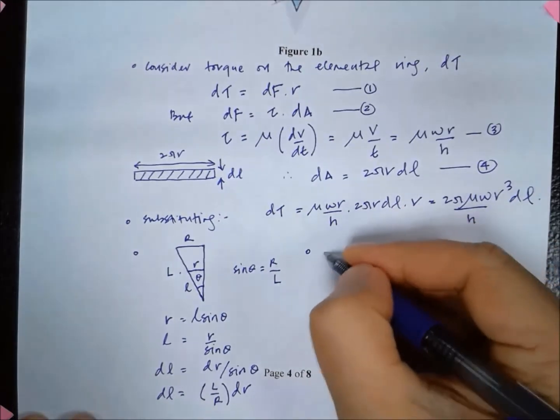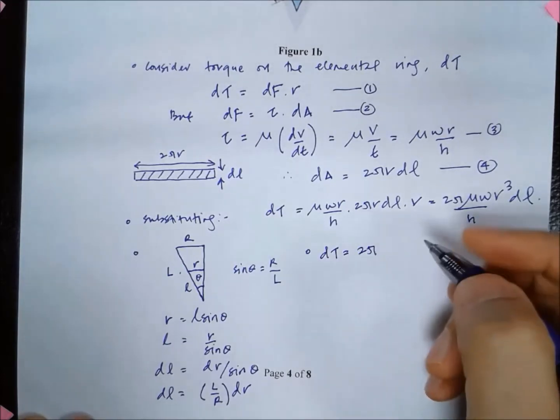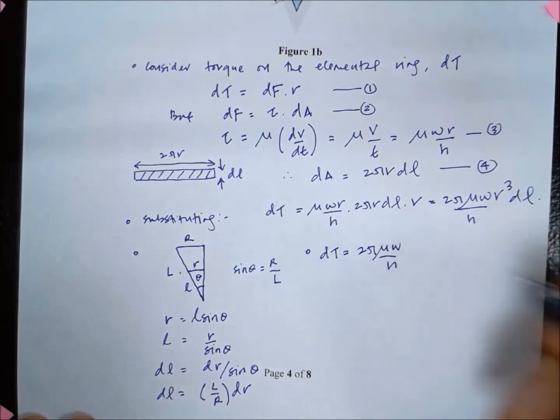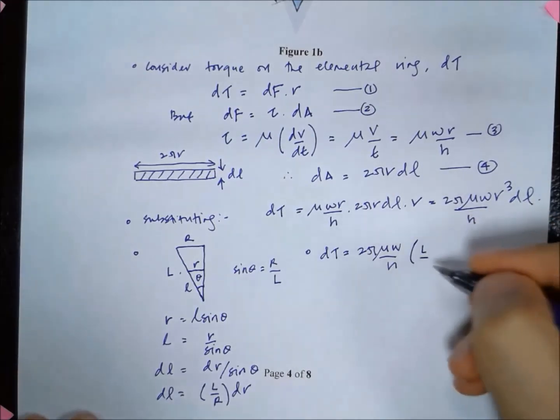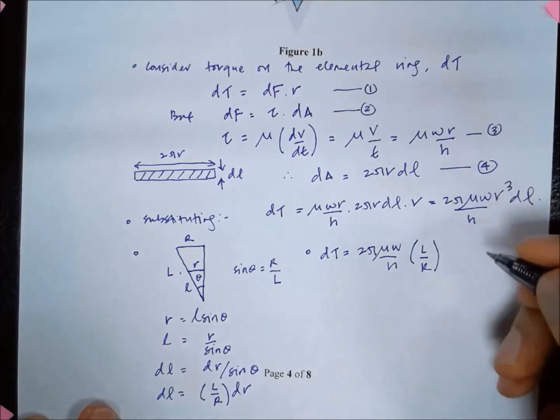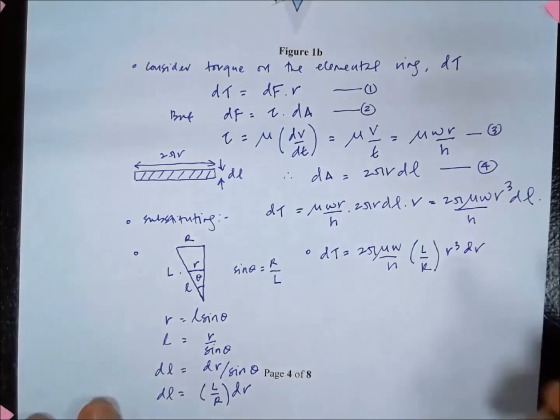dτ is equal to 2π mu omega over h, L over R, r cubed dr. Now it's in terms of dr.